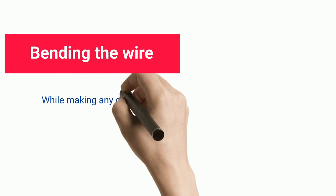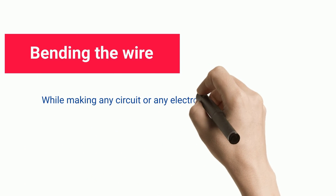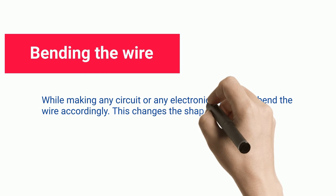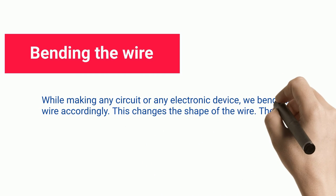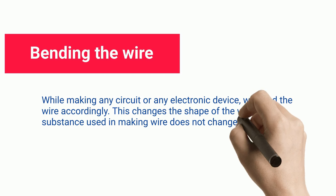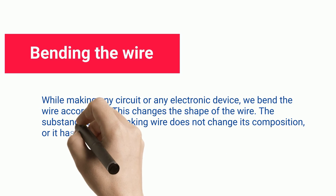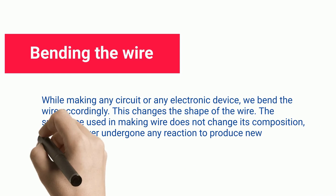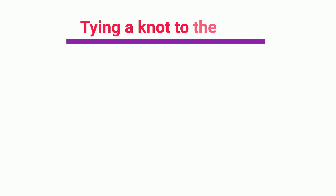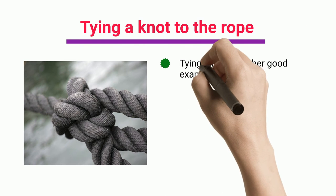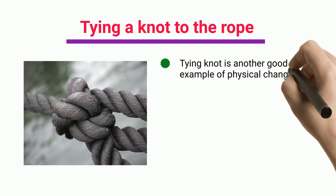Bending wire: while making any circuit or electronic device, we bend the wire accordingly. This changes the shape of the wire, but the substance used in making the wire does not change its composition or undergo any reaction to produce new components.